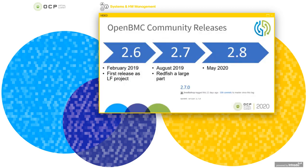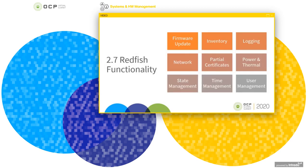OpenBMC releases are every six months, roughly following Yocto releases. Release 2.6 in February 2019 was the first community release as a Linux Foundation project. Release 2.7 was August 2019, and Redfish was a large part. Release 2.8 is targeted for May 2020. With the 2.7 release, there was enough Redfish functionality for basic system management.